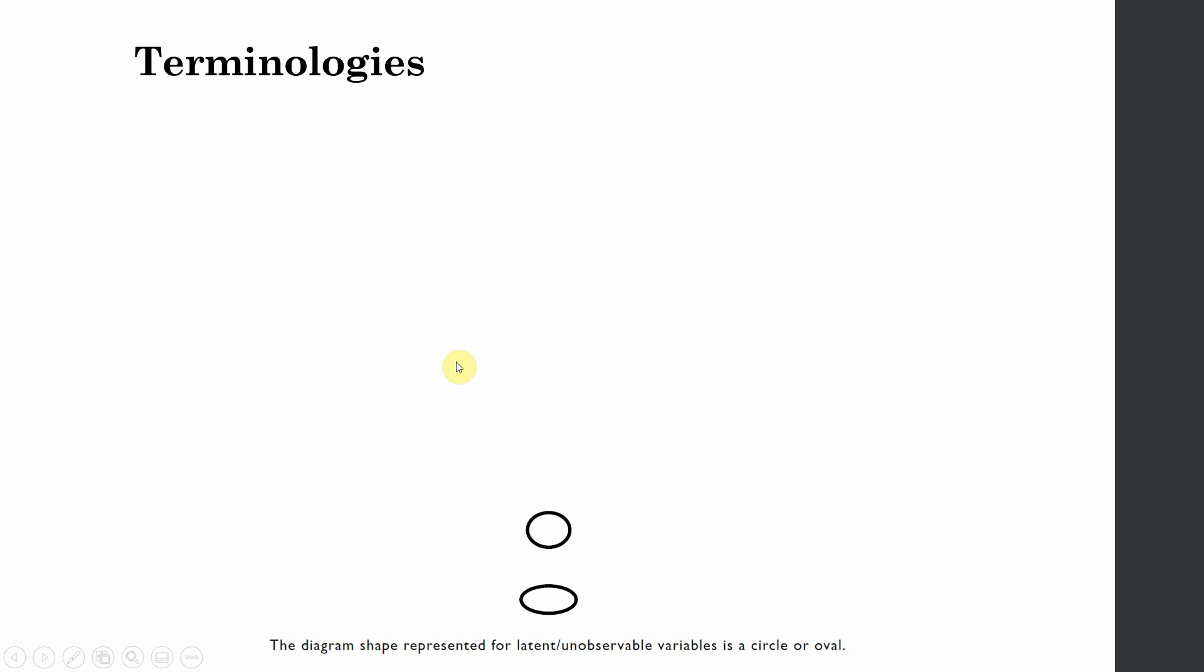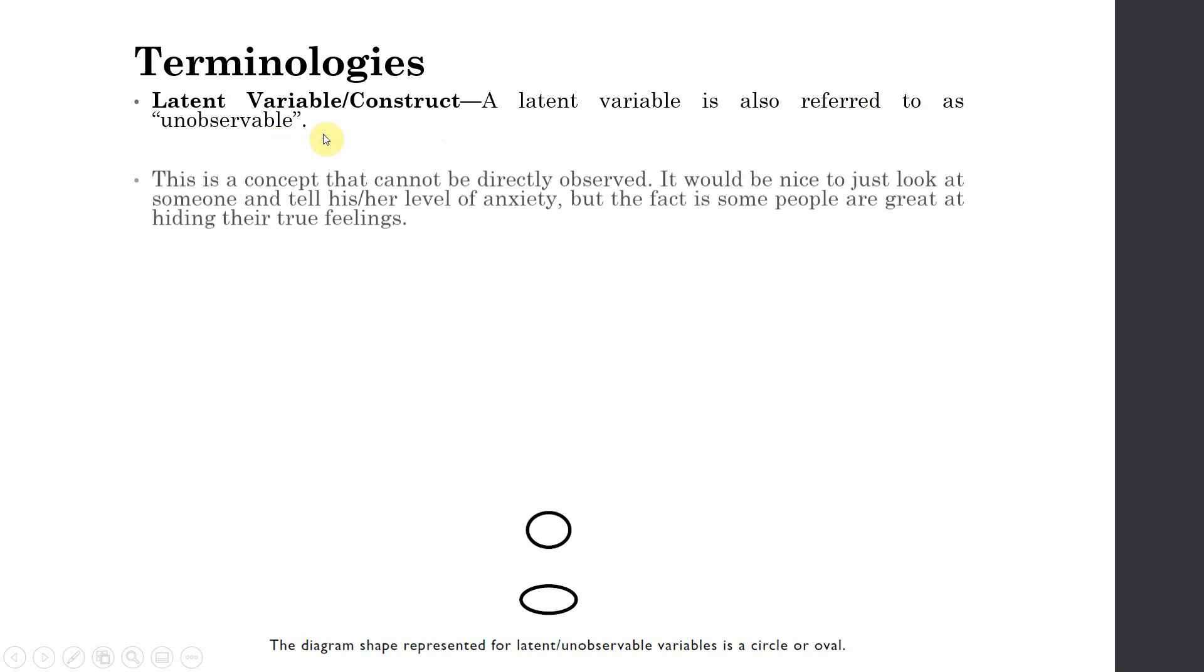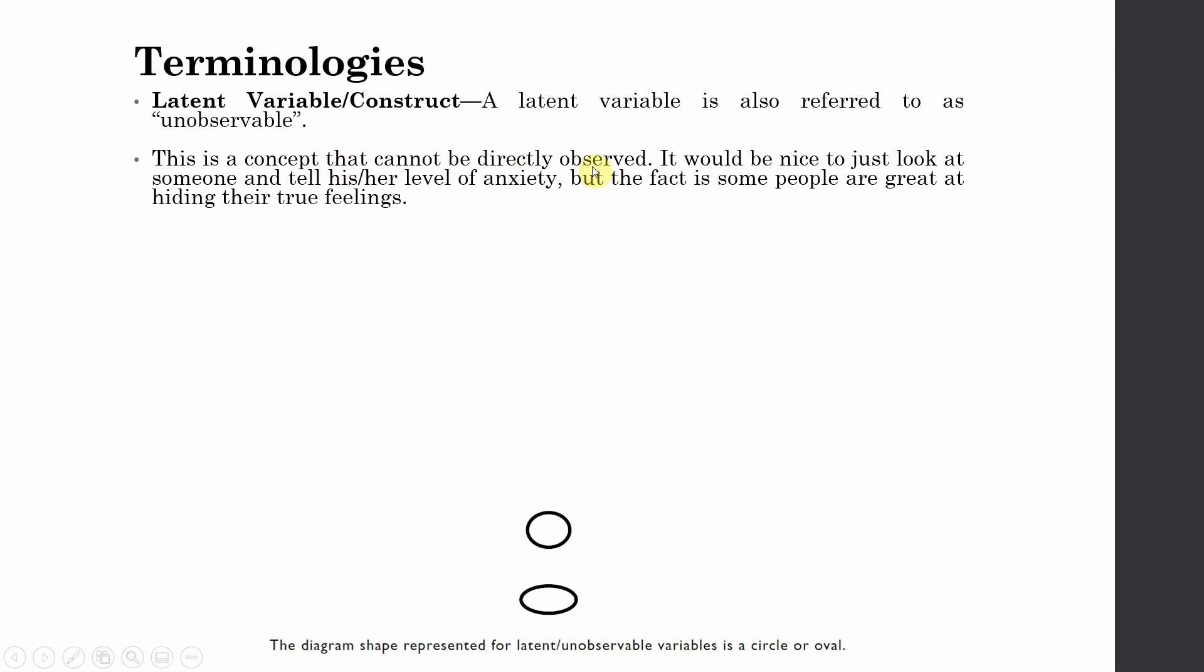Latent variable or construct: A latent variable is also referred to as unobservable. This is a concept that cannot be directly observed. It would be nice to just look at someone and tell their level of anxiety, but the fact is some people are great at hiding their feelings.